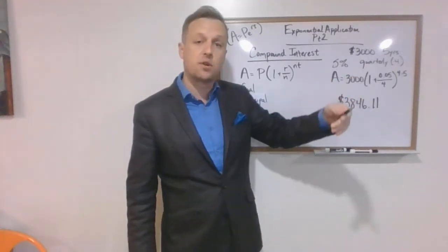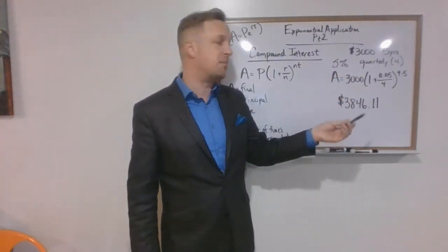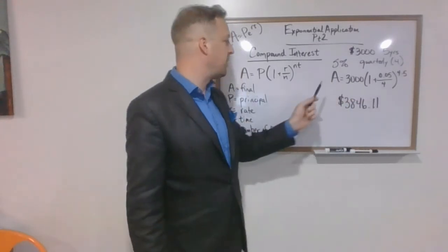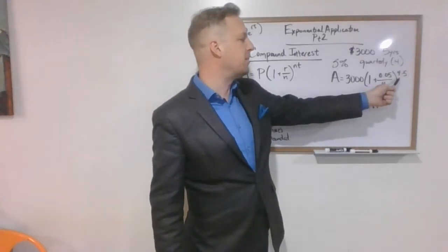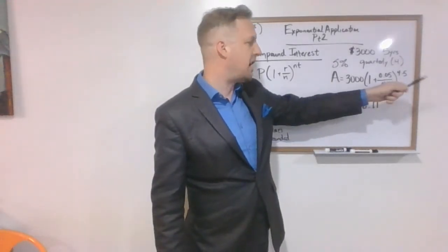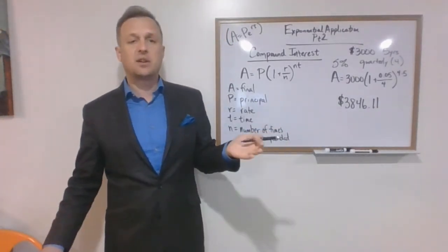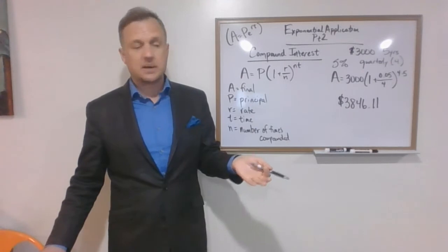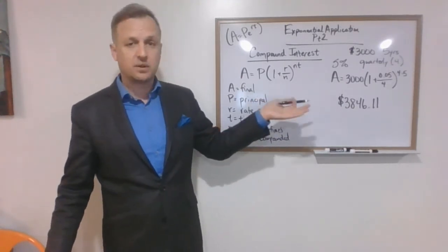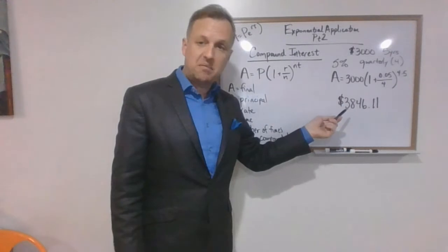Remember that is the number of times we compound the interest per year. So since we do it quarterly, that happens once every 3 months or 4 times. And then we're going to raise that to the power of the number of times compounded times the time, or 4 times 5. To be frank, when you punch that into your calculator, you do not need to put 4 times 5, everybody here knows that's 20, you can just go ahead and do that.